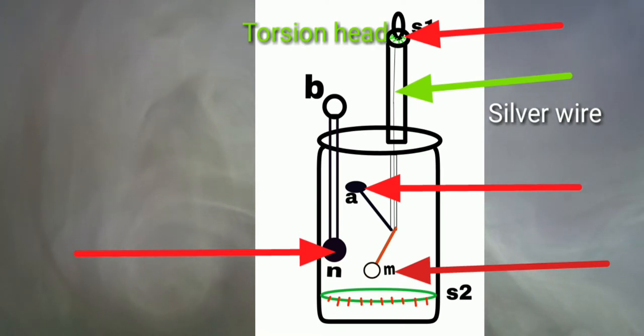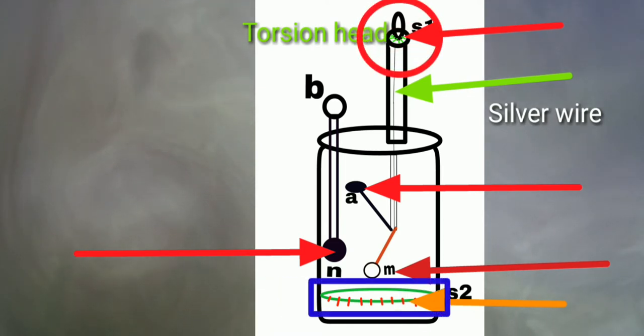Round the glass case, a circle is drawn and divided into degrees. So there are two scales in this machine. First one is to the torsion head named S1 and second one is to the glass case named S2.